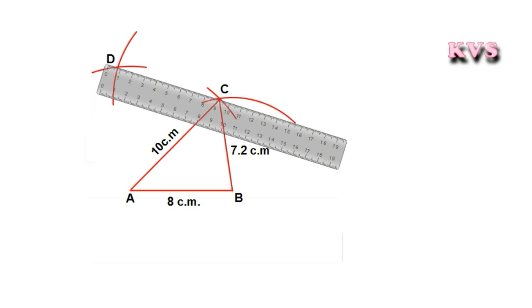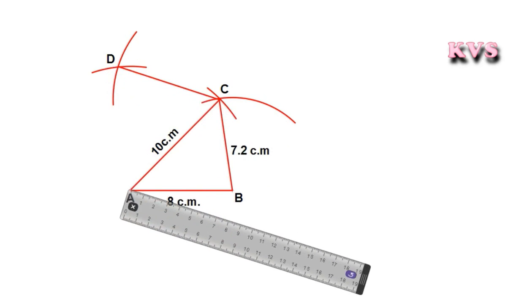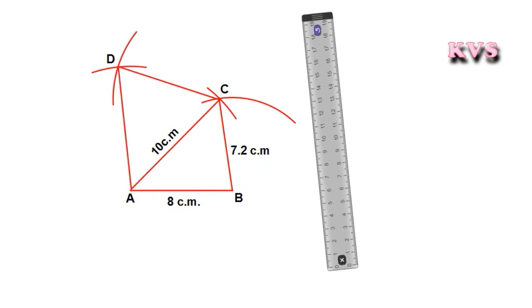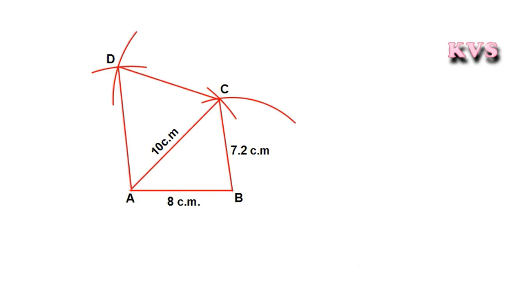Now join CD and AD. So, ABCD is the required quadrilateral for the given data.